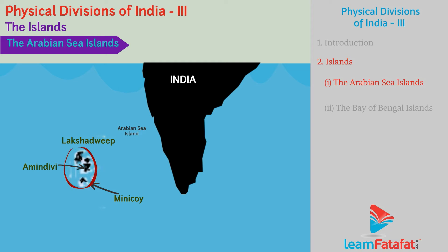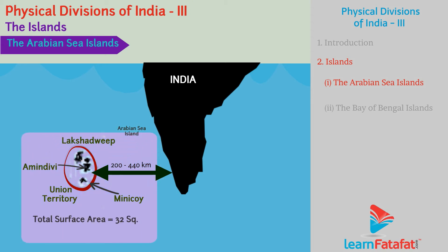These Islands are situated at about 200 to 440 km from the southwest coast of India. These Islands form the smallest Union Territory of India, with a total surface area of about 32 square kilometers. The capital of this Union Territory is Kavaratti. These Islands have great biodiversity and dense forests.